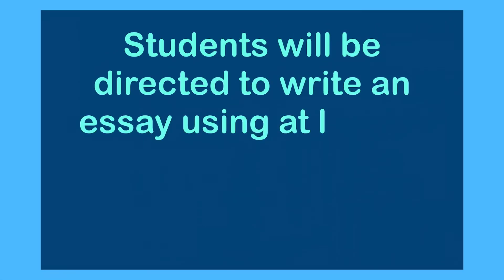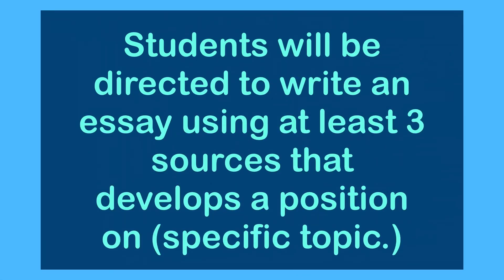Students need to cite three different sources in their essay, and I want to clarify what this means because sometimes students misunderstand. Three different sources means you have to cite three separate sources. If you cite the same source more than once, that counts as multiple citations of that source but it does not count as a different source. For instance, if you cite source A twice and then cite source B and that's it, you've only cited two sources.